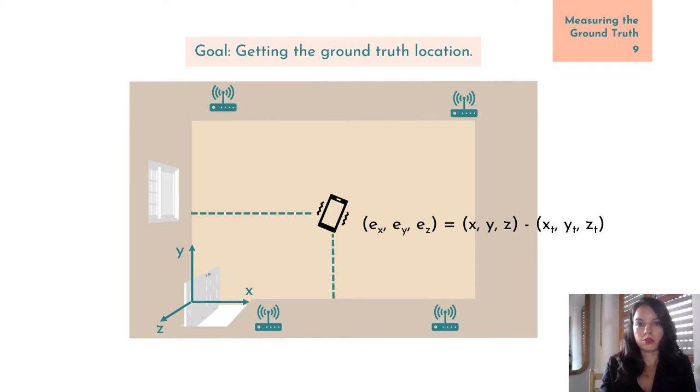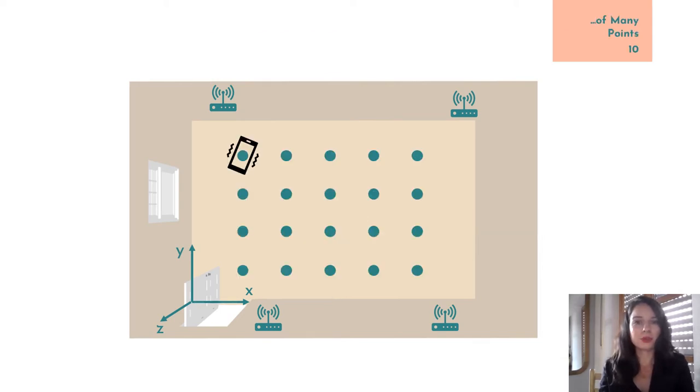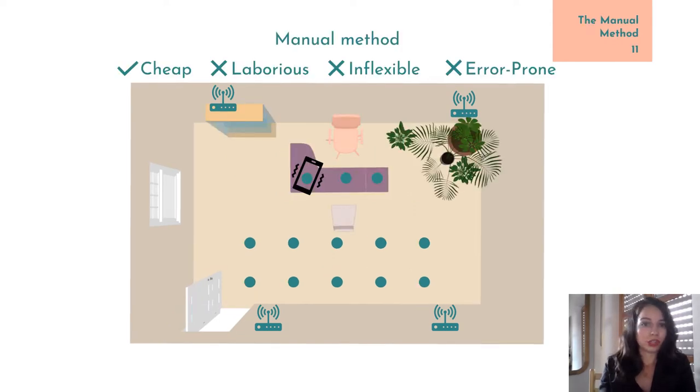The cheapest method to do this is to manually measure the ground truth location of some test points, similarly to how we measure the location of the anchors before. However, we would have to do this for a large number of test points, which is very time consuming. And if we change the room in which we conduct the experiments, we have to measure the location of other test points all over again.